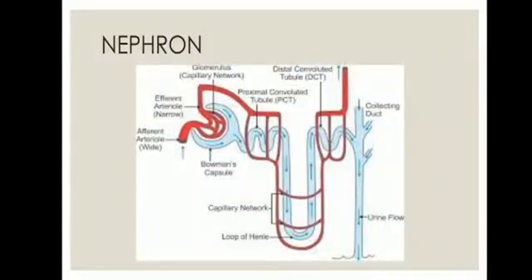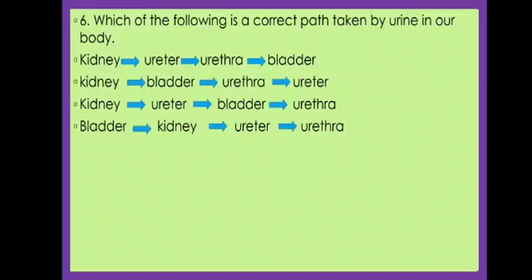The afferent arteriole filters blood in the Bowman's capsule through the glomerulus, then we have the proximal convoluted tubule, then Henle's loop, the distal convoluted tubule, and then the collecting duct. The sixth question: Which of the following is the correct path taken by urine in our body? The right option is: kidney → ureter → bladder → urethra. Option C is the right answer.